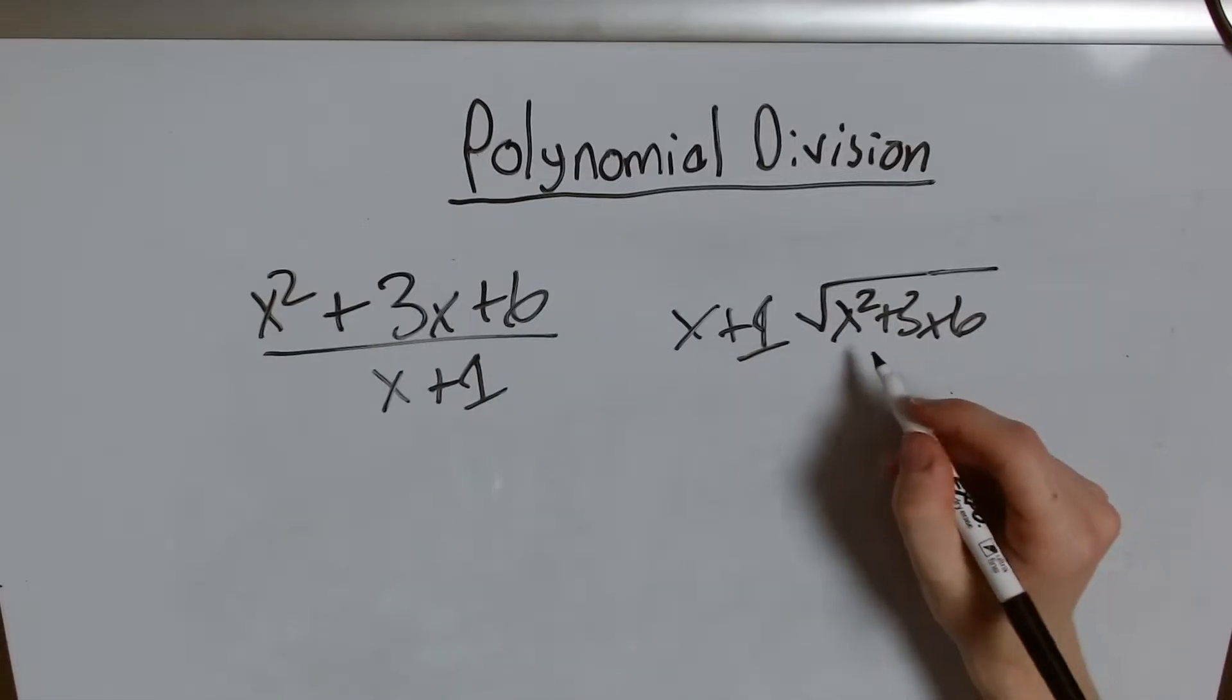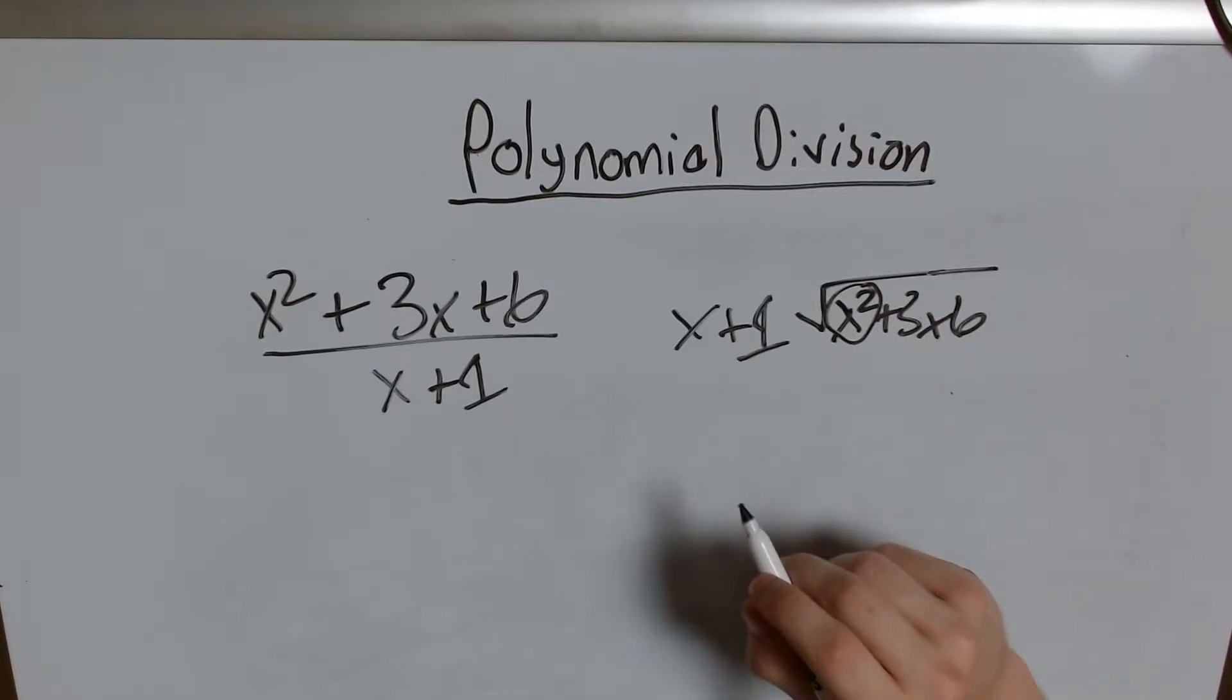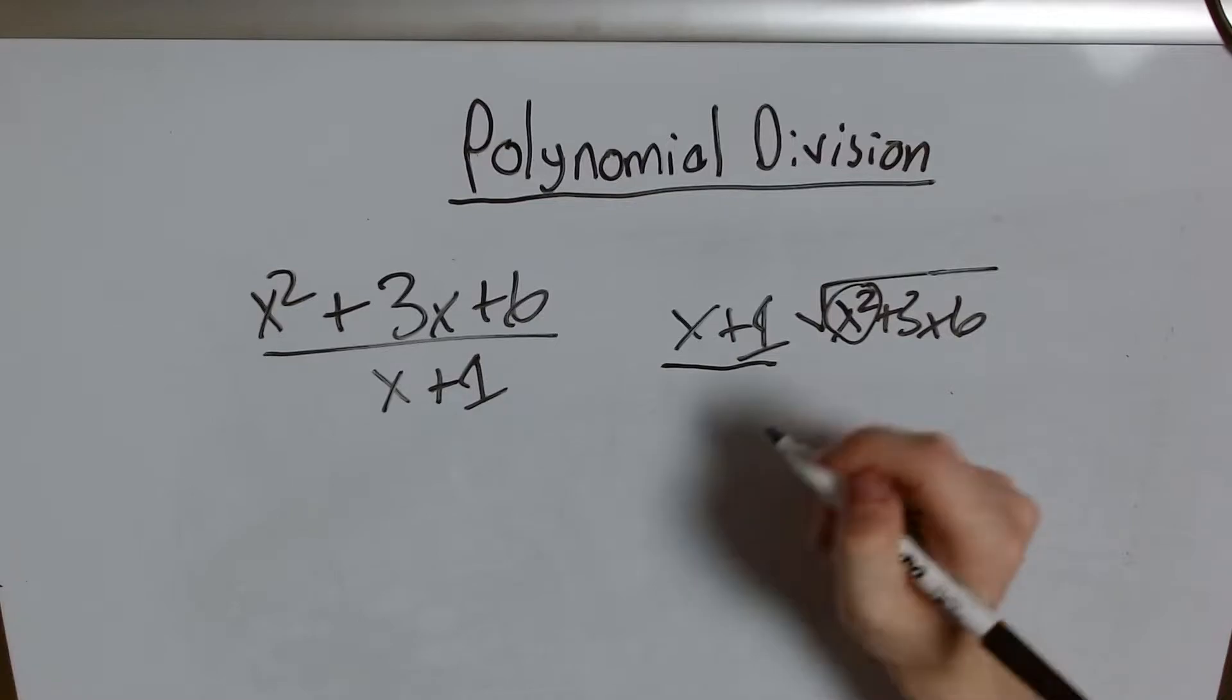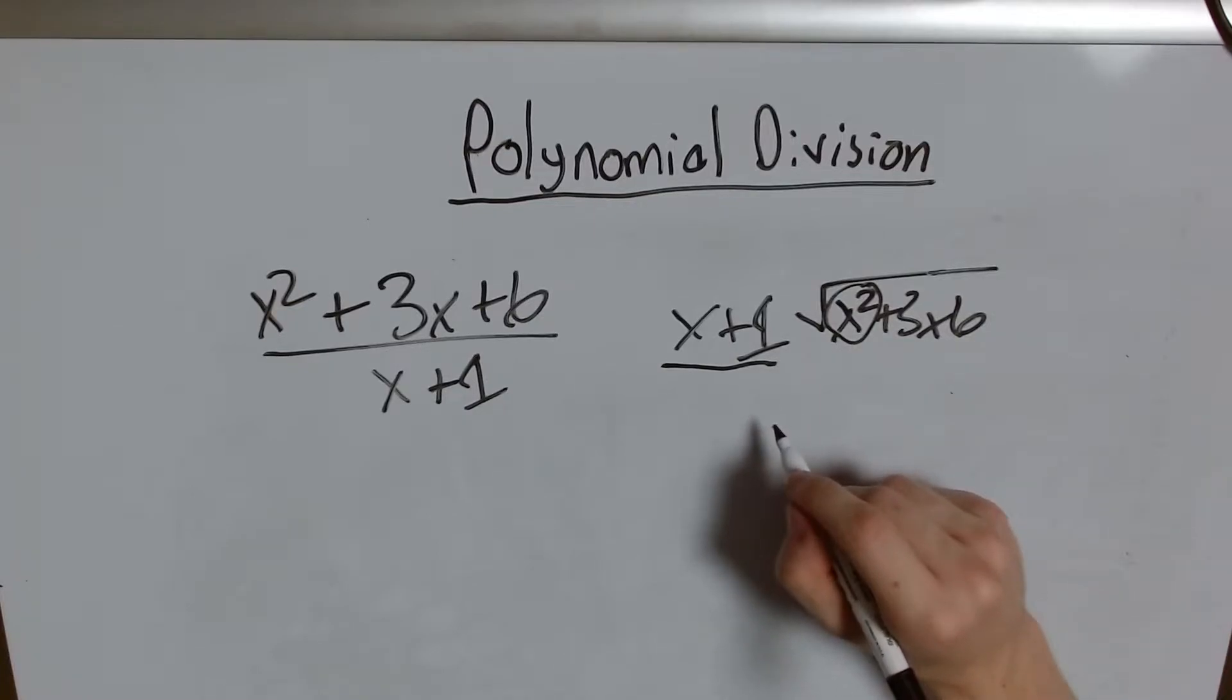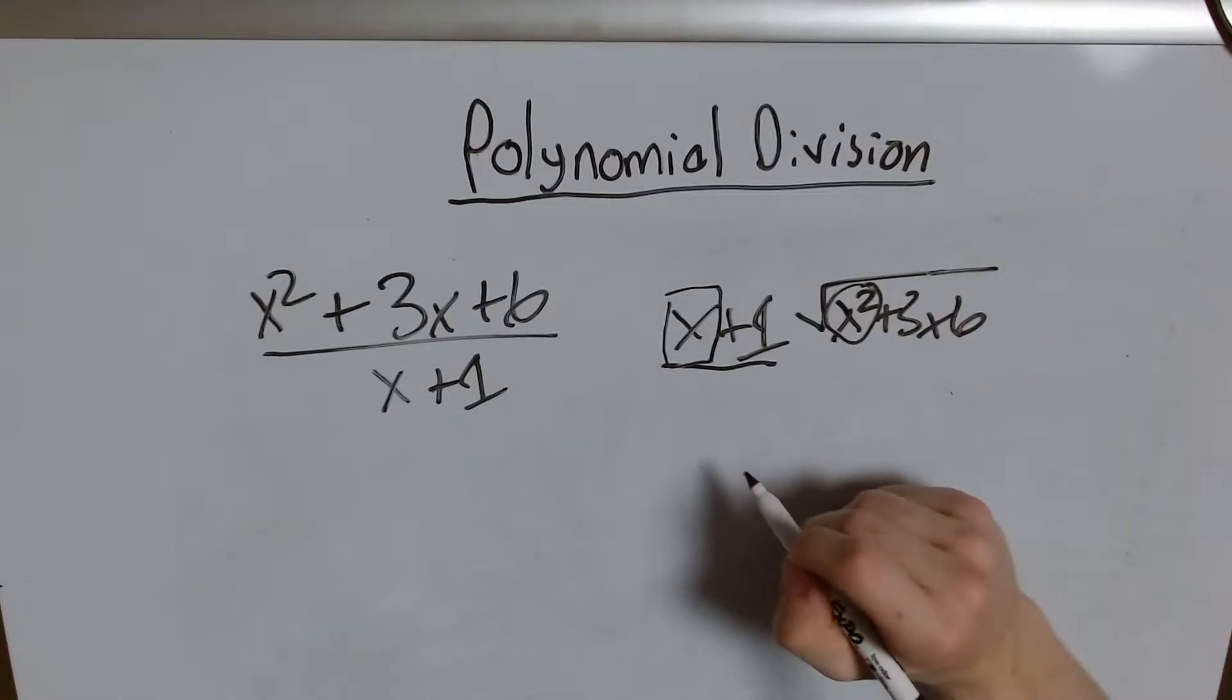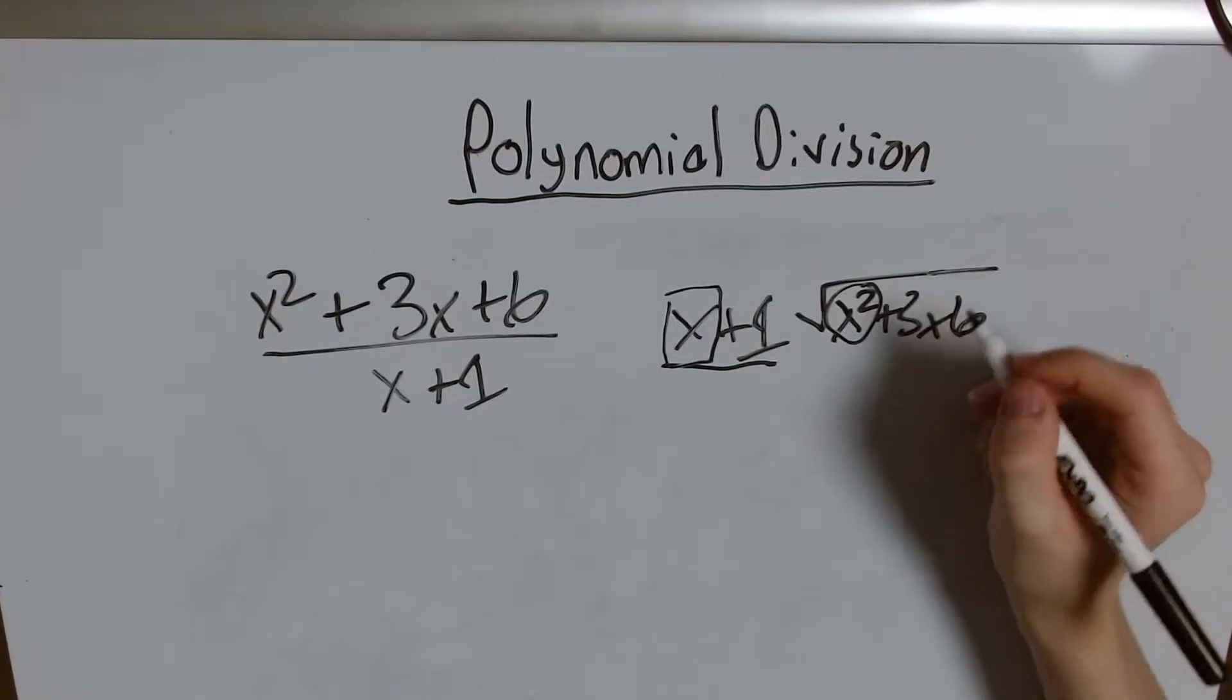And my first step is always to say what's my leading term and how do I get rid of it? Or in other words what do I have to multiply this by to get x squared? Well, I'm looking at x and I say what do I have to multiply x by to get x squared? It's pretty simple. Just an x.